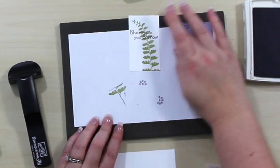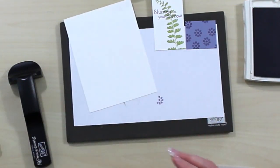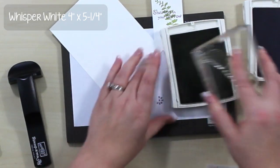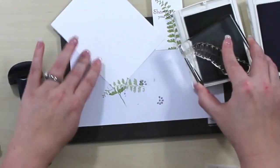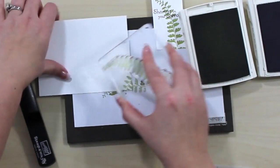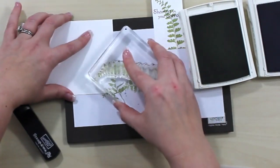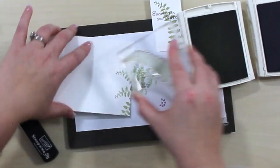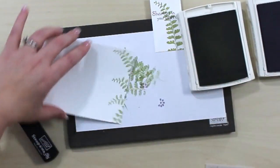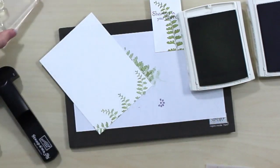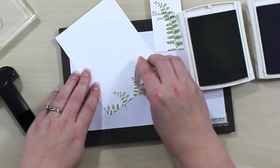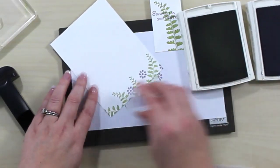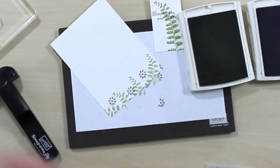Okay, now the next thing that I need to stamp is going to be on a piece of Whisper White that's 4 inches by 5 1/4 inches. I'm going to bring back in the Pear Pizzazz and I'm just going to stamp these leaves across the bottom. There we go. And then I'm going to go back with that little purple stamp in that Wisteria Wonder. There we go. That's all there is to that.